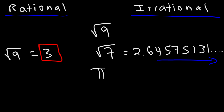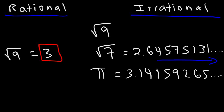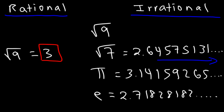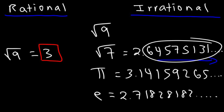Now what about pi? Is pi rational or irrational? If you type pi into your calculator, you're going to get a decimal number that looks like this: 3.14159265, and this also goes on. So pi is an irrational number. Another example is the number e — its decimal value is 2.71828182 and so forth. That's how you can identify irrational numbers: they have an infinite number of decimal places, go on forever, and you can't write them as a ratio of two integers.